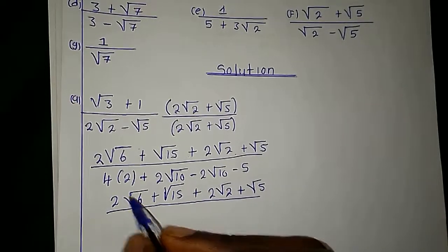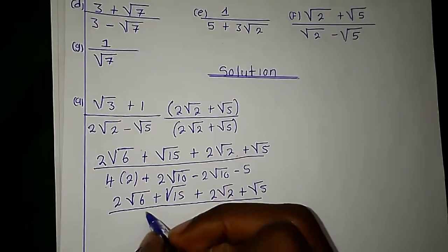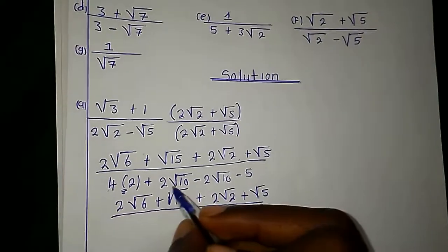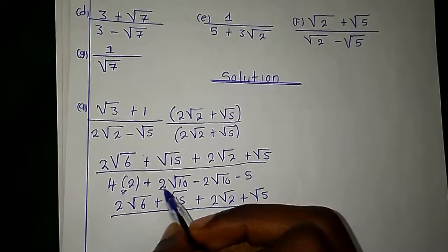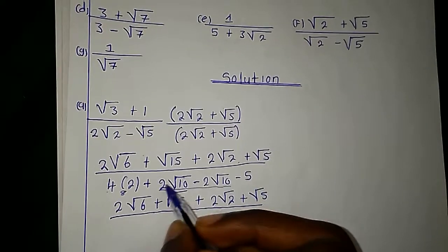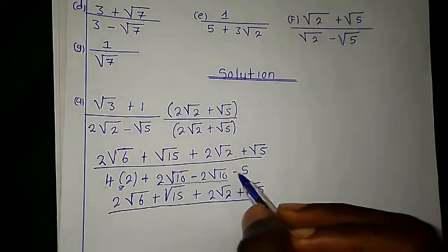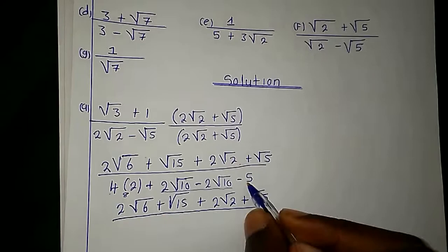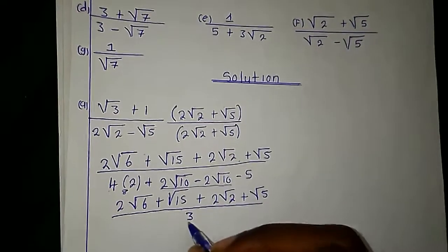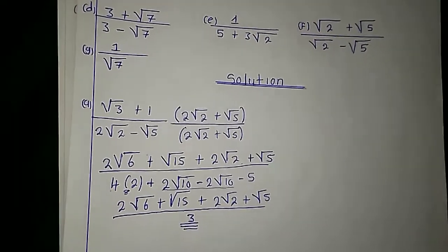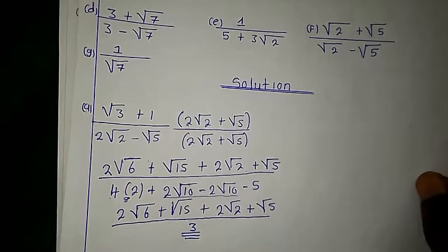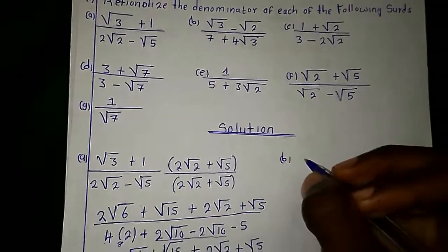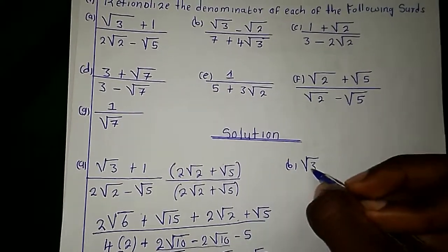We cancel the radicals in the denominator. 4 multiplied by 2 is 8, and the middle terms give us zero, so we have 8 minus 5. The answer is 3. Therefore, this is our final answer for part A. Now let's get to B — they are saying root of 3 minus root of 2 over 7 plus 4 root of 3.